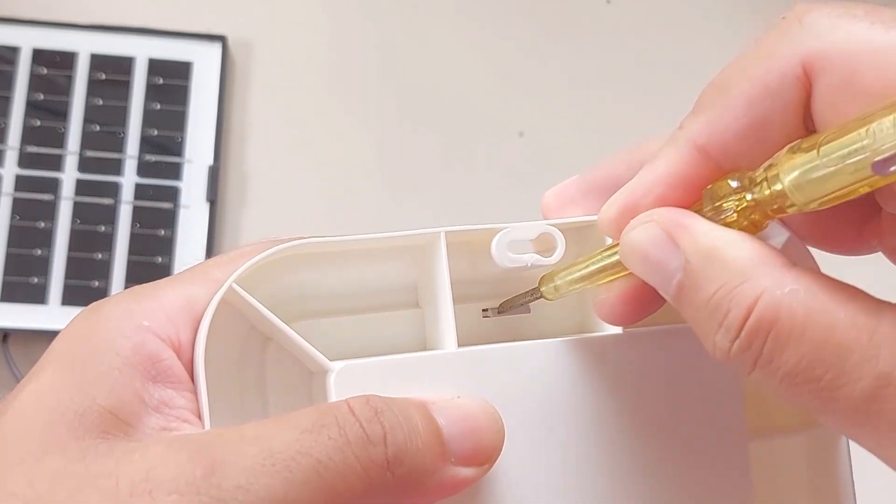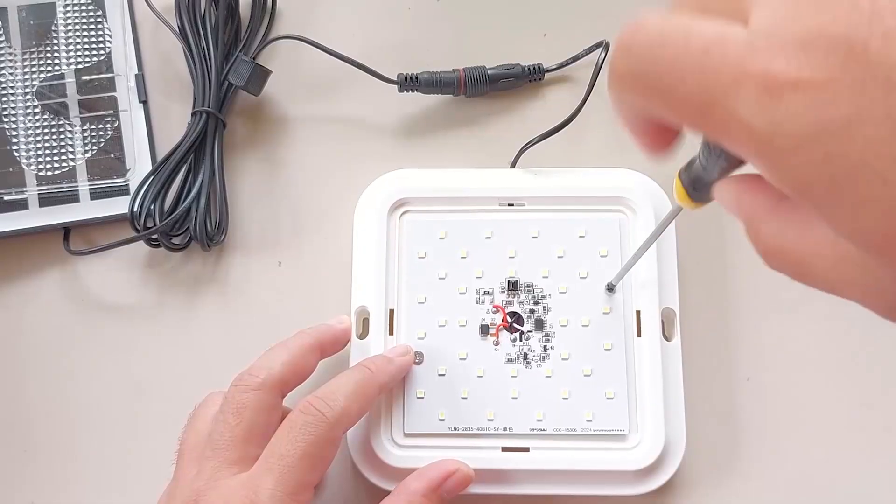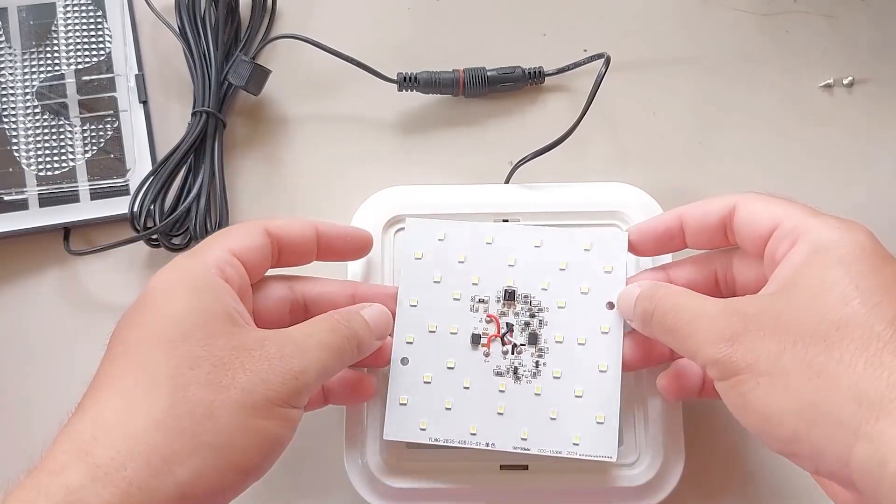To get to the battery just press on the tabs on the back with a flat tool to pop off the clear plastic cover then unscrew the two screws holding down the board in place.